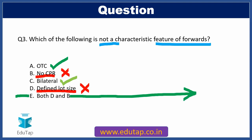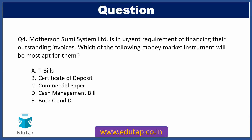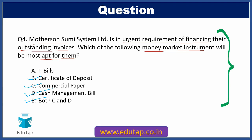Moving on to question four: Motherson Sumi Systems Limited has an urgent requirement of financing their outstanding invoices. Which of the following money market instruments will be most applicable for them? Option A: T-bill, Option B: Certificate of Deposit, Option C: Commercial Bill, Option D: Cash Management Bill, Option E: Both C and D. This question comes from the primary and secondary market topic of the finance syllabus.